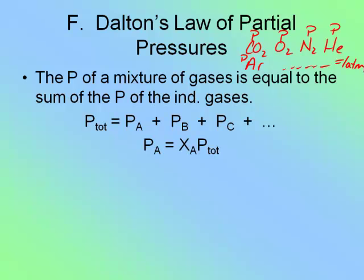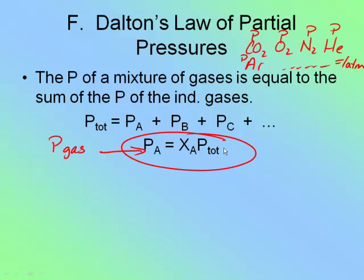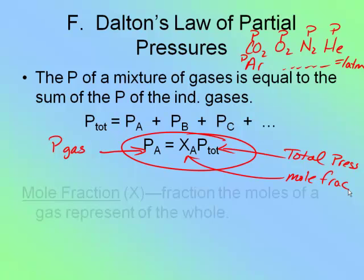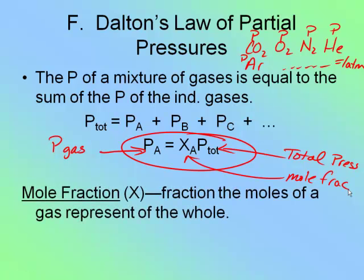If we want to calculate a little bit differently — let's say we wanted to calculate one particular gas — so I know the air pressure is one atmosphere and I want to know what the pressure of only the oxygen in that mixture is. The formula we're going to use has P_A as the pressure of that gas, the total pressure, and what is called the mole fraction. The mole fraction is the fraction of the moles of one gas out of the entire mixture.